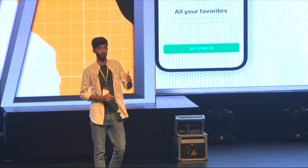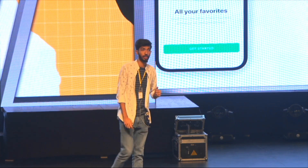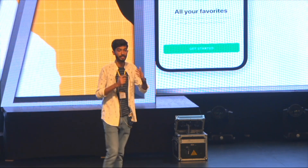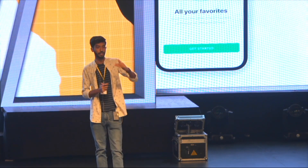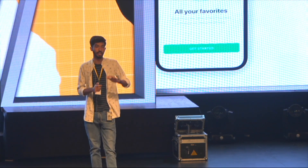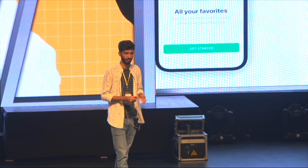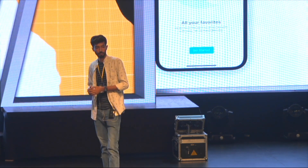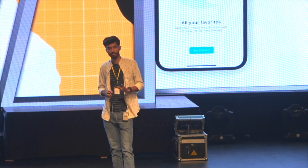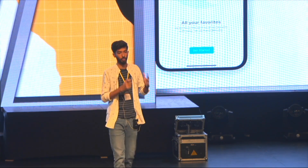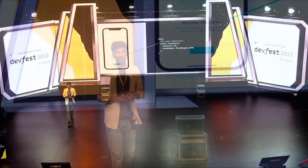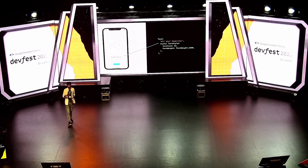Let's start building — we start with the onboarding or starting screen. To build this in Flutter, inside a column you need an image, then a text for the title, another text for the description, and at the end a button. Once you do that in Flutter, it looks similar to what we really want, but not exactly what we have.